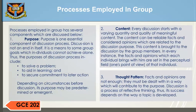Processes employed in group discussion have several components. 1. Purpose. Purpose is one essential component of the discussion process. Discussion is not an end in itself; it is a means to some group goals which individuals cannot achieve alone. The purposes of the discussion process include: to solve a problem, to aid in learning, and to secure commitment to later action. Depending on the circumstances, the purpose may be predetermined or emergent.